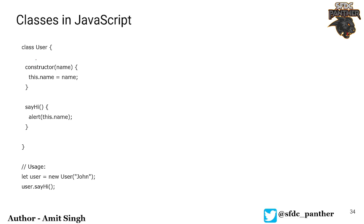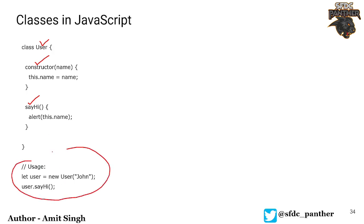Here we have a class called User. This class has a constructor requiring one parameter which is name, and sets this.name equal to name. Even if we don't explicitly declare a variable, the name will be assigned whatever value you pass in. Then we have a method called sayHi which alerts this.name.